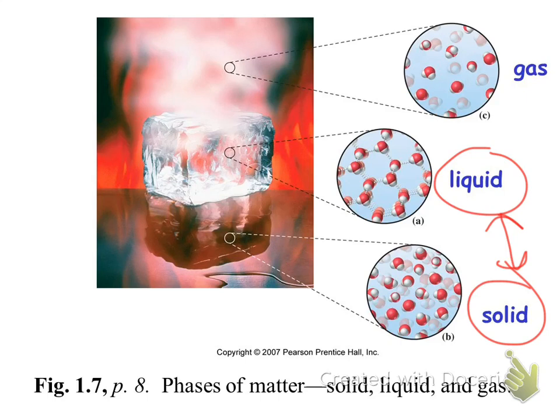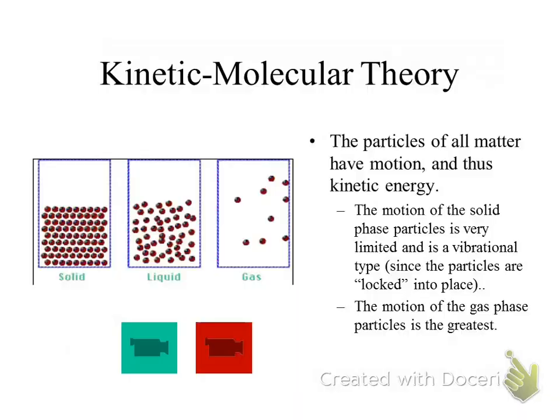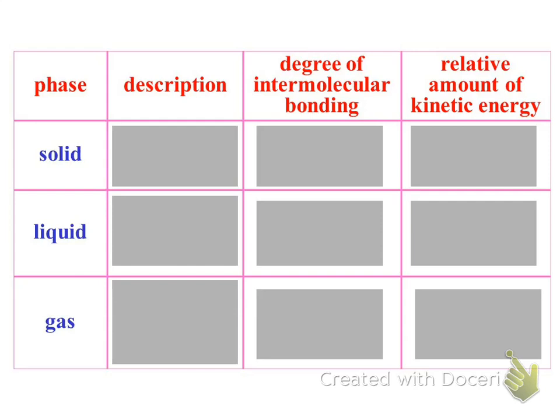We'll talk more about intermolecular bonds later. If you've taken physics, you've talked about the two broad types of energy: kinetic energy and potential energy. Kinetic energy is associated with motion. All matter has a certain amount of kinetic energy because all matter has motion, even if it's solid. That kind of summarizes what we call the kinetic molecular theory. The three phases of matter differ in how many intermolecular bonds they have and how much kinetic energy they have.